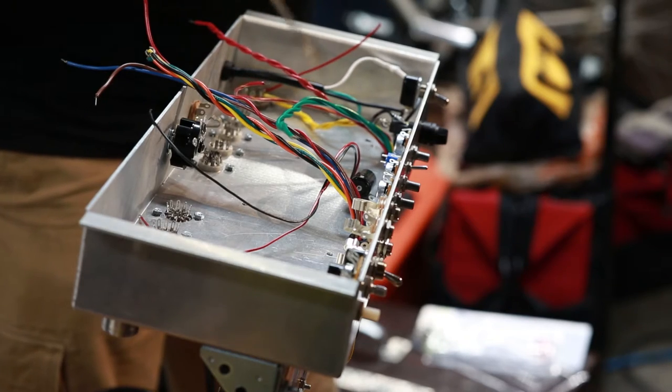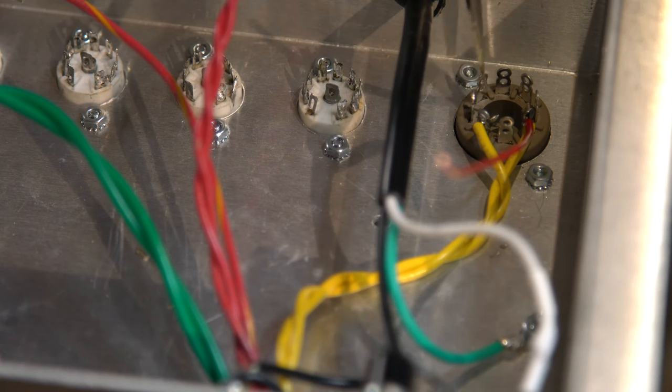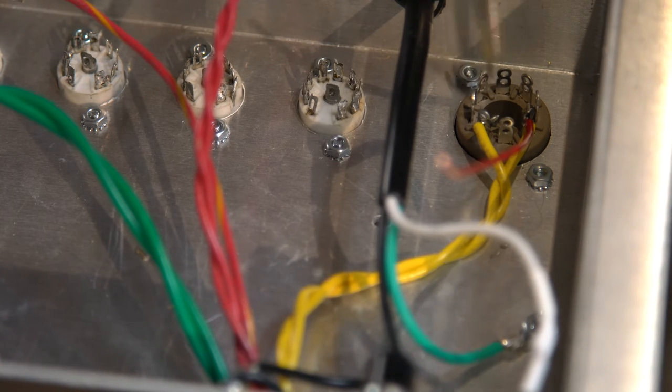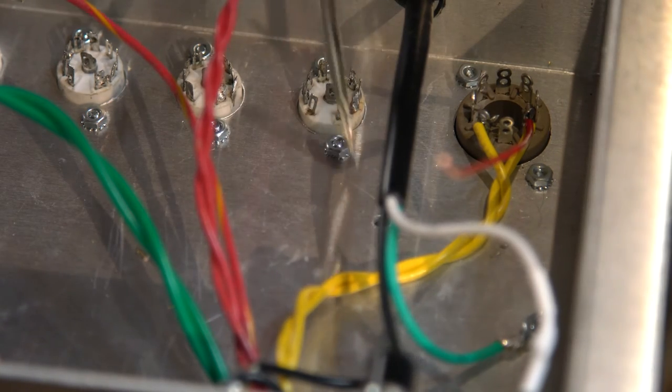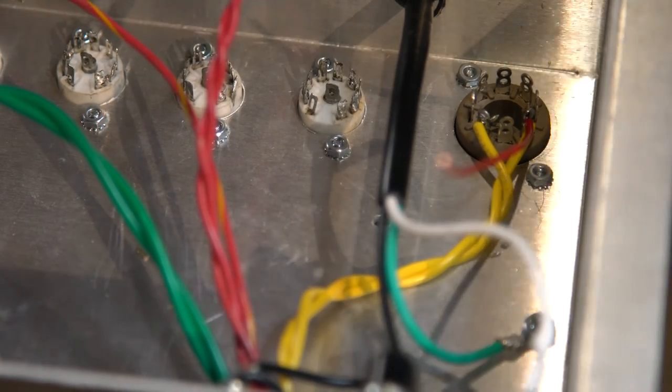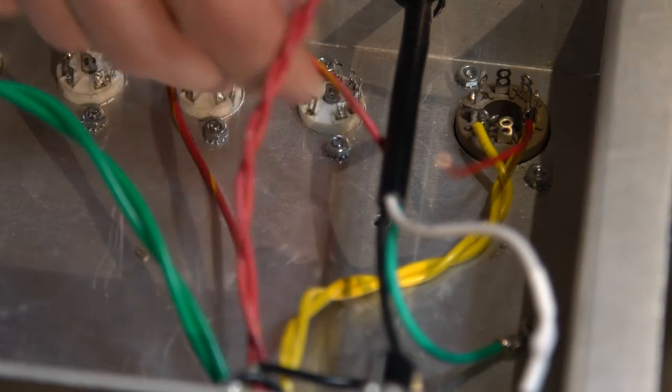I'll hook these guys up, this is 2, 4, and 6. I'll bring that along the same path and probably wrap it around this side just to try and keep it away from the output tubes as much as possible. This wire is going to go to ground over here.